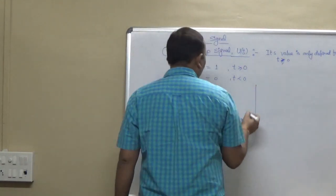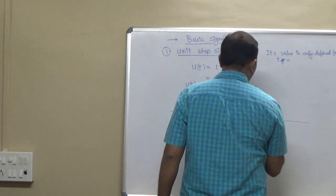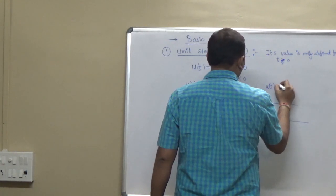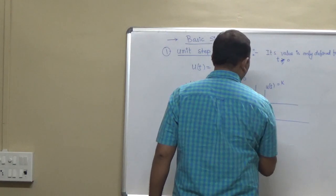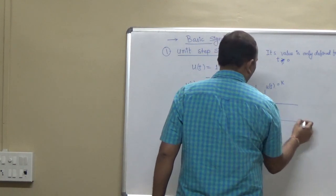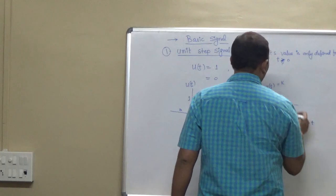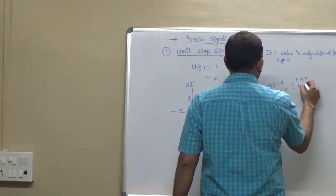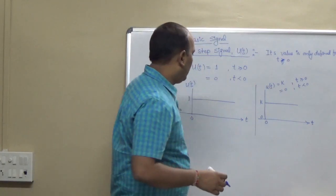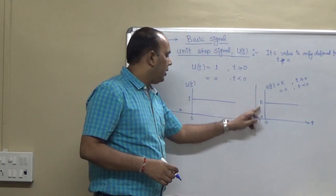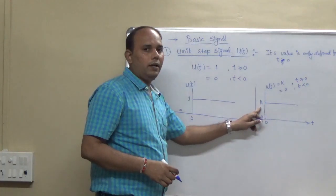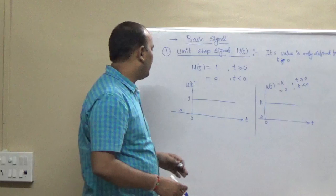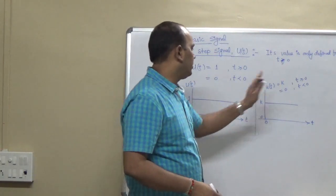For any general step signal, the definition is: for t greater than 0, its value will be k, so u(t) equals k. Before t equals 0, it will be 0, and after t equals 0, it will be k up to infinity. The step at t equal to 0 is k, and after t equals 0, up to infinity, it will be k. This is the normal step function, as opposed to the unit step.